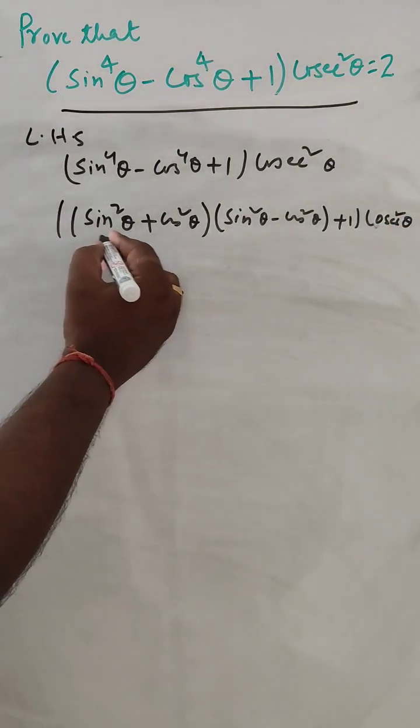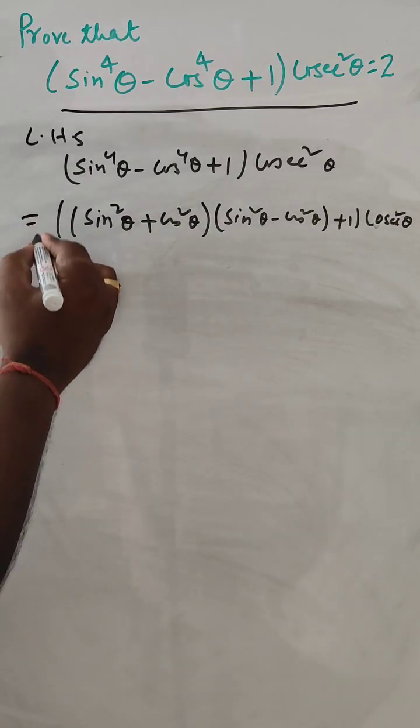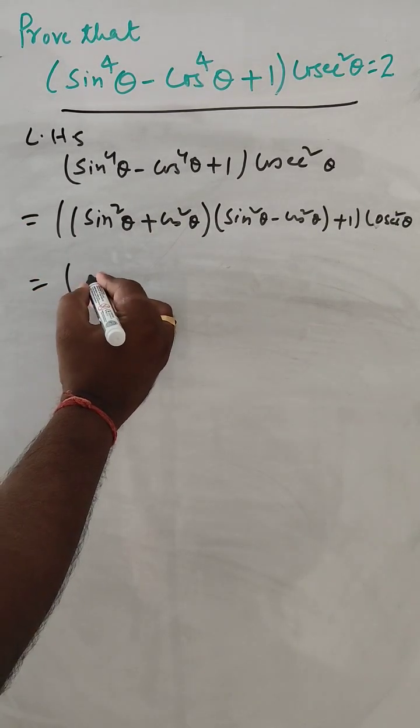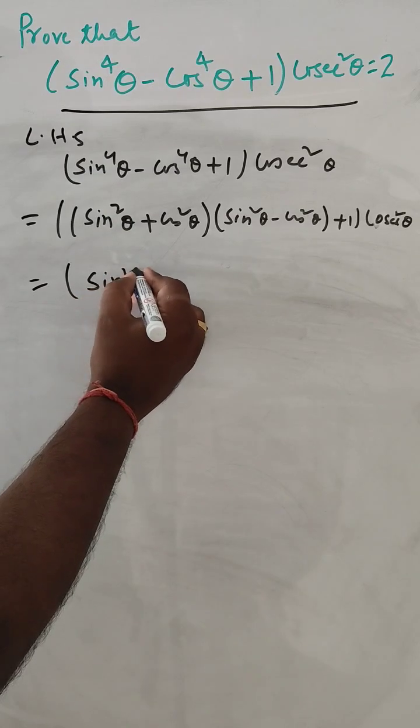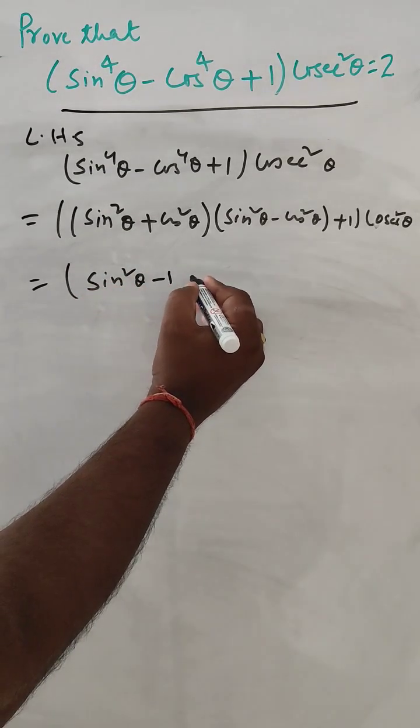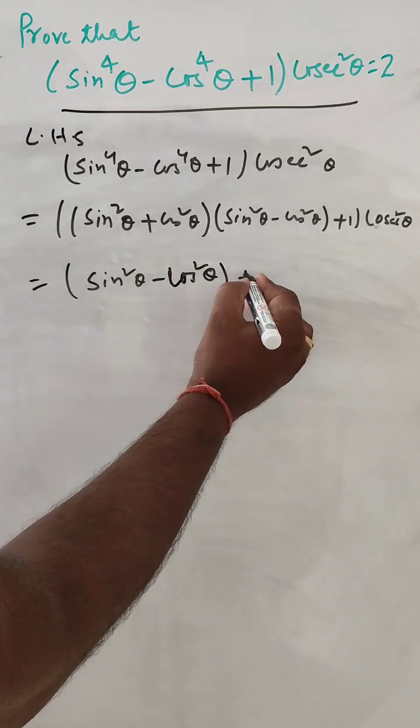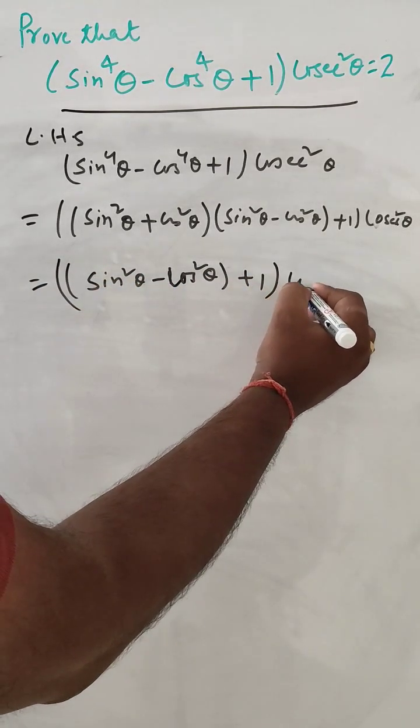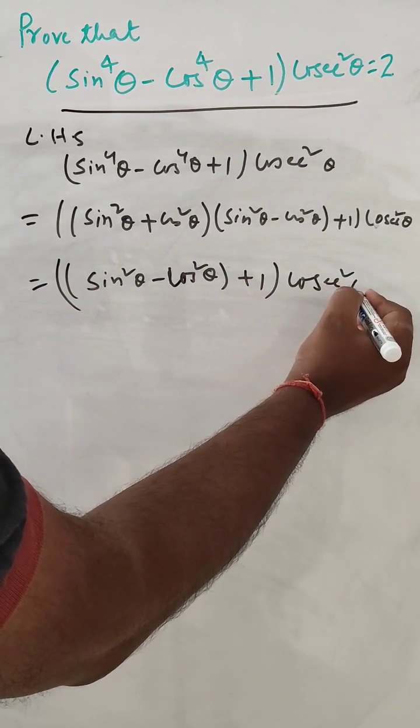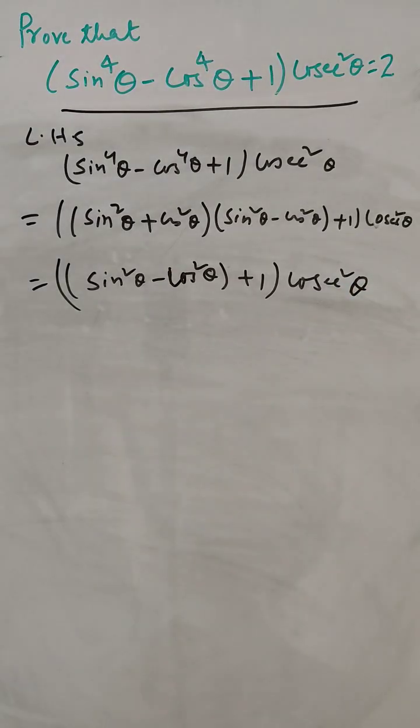So this will be one. So next step is sin square theta minus cos square theta plus 1 into cos square theta.